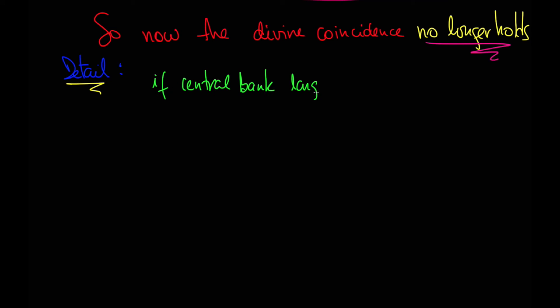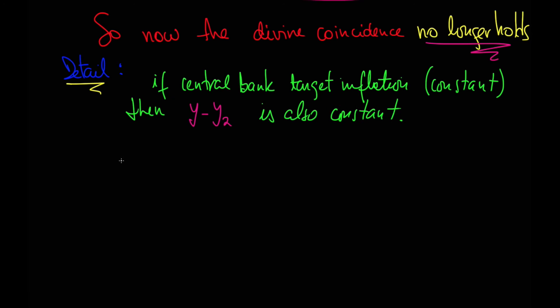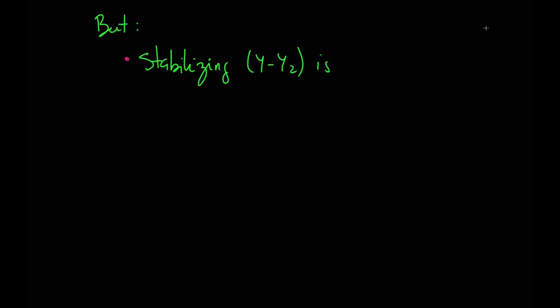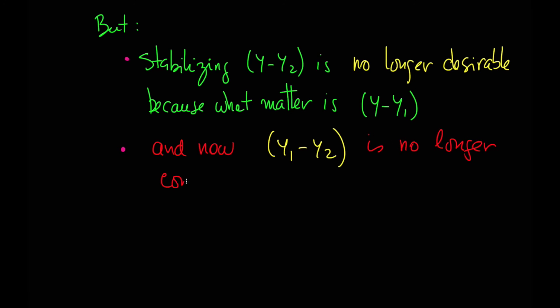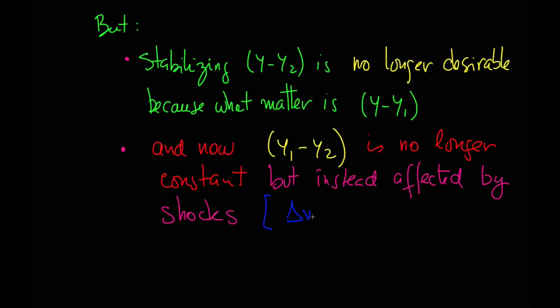So now the divine coincidence no longer holds. In detail, if the central bank targets inflation — like a constant level of inflation — then Y minus Y2 is also constant. But stabilizing Y minus Y2 is no longer sufficient, because what matters is the difference between Y and Y1. And now Y1 minus Y2 is no longer constant, but instead is affected by the shocks.